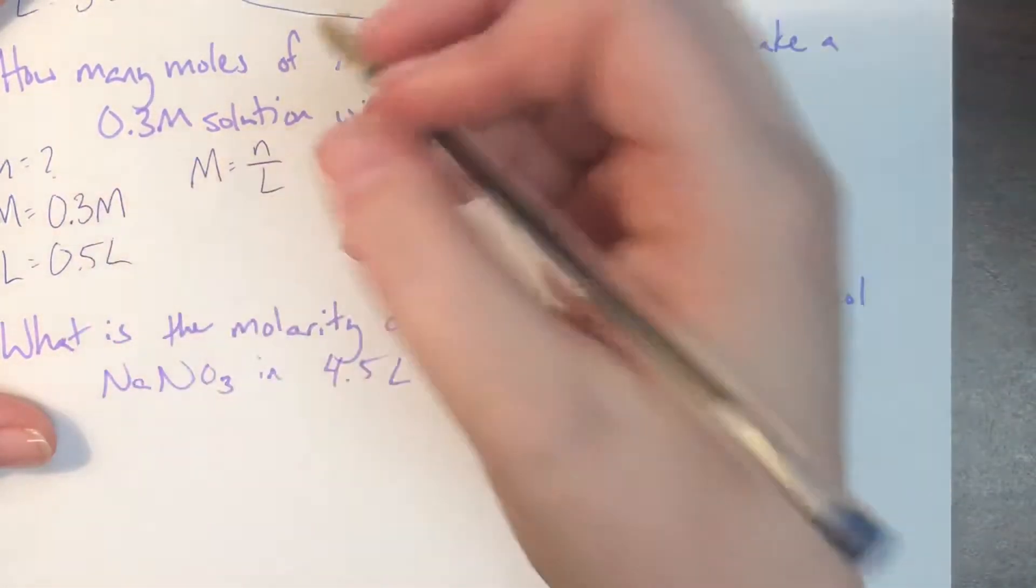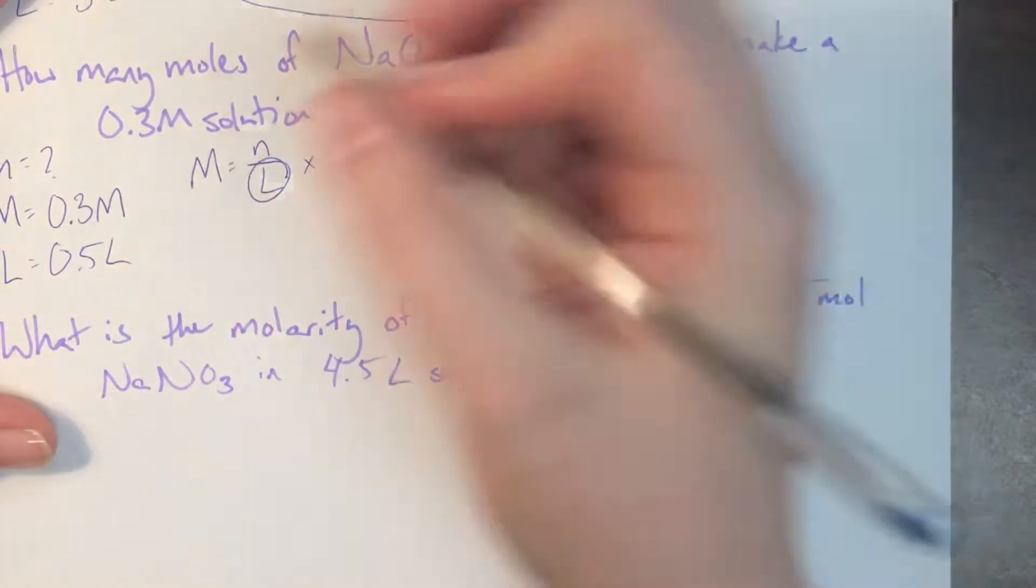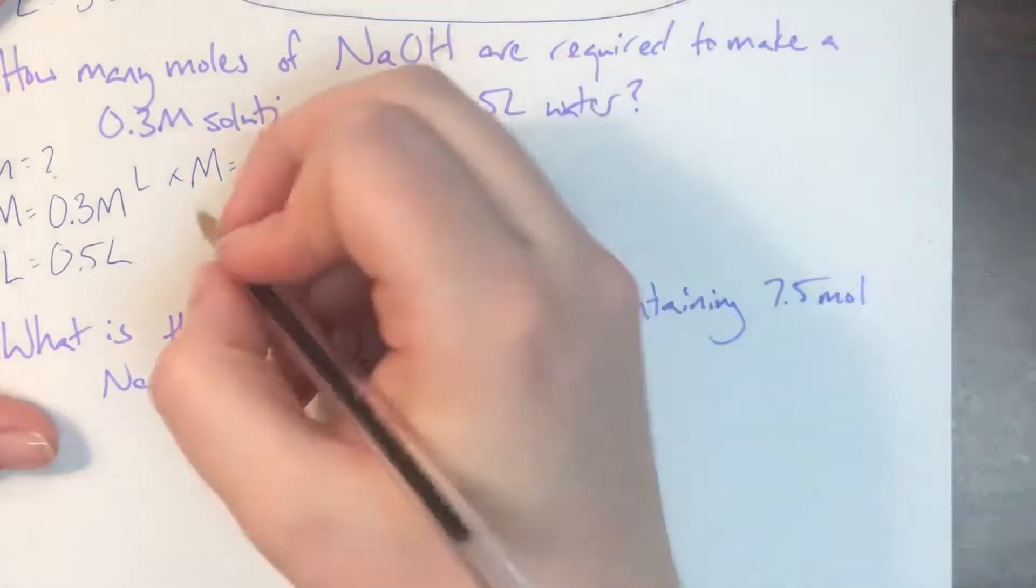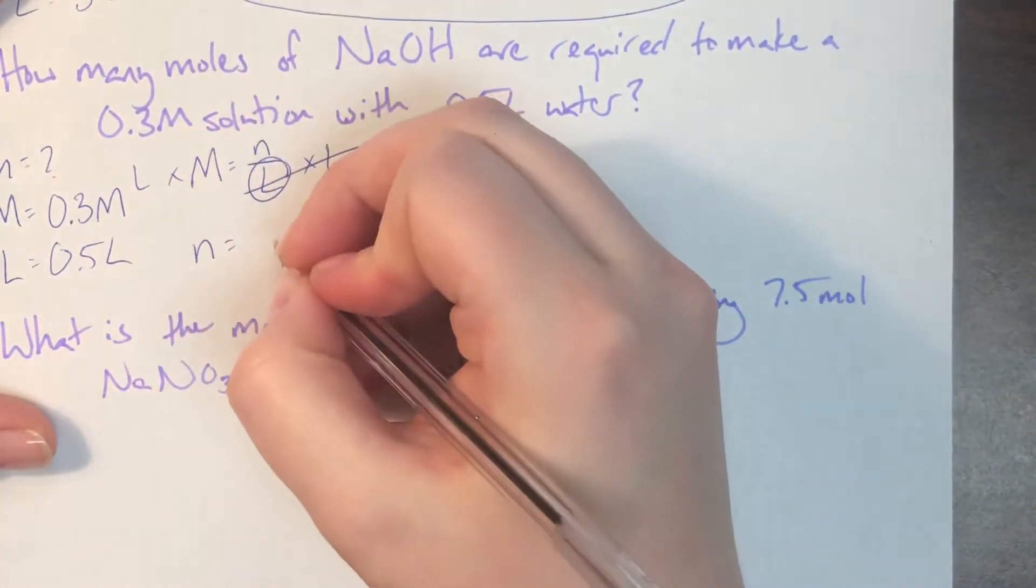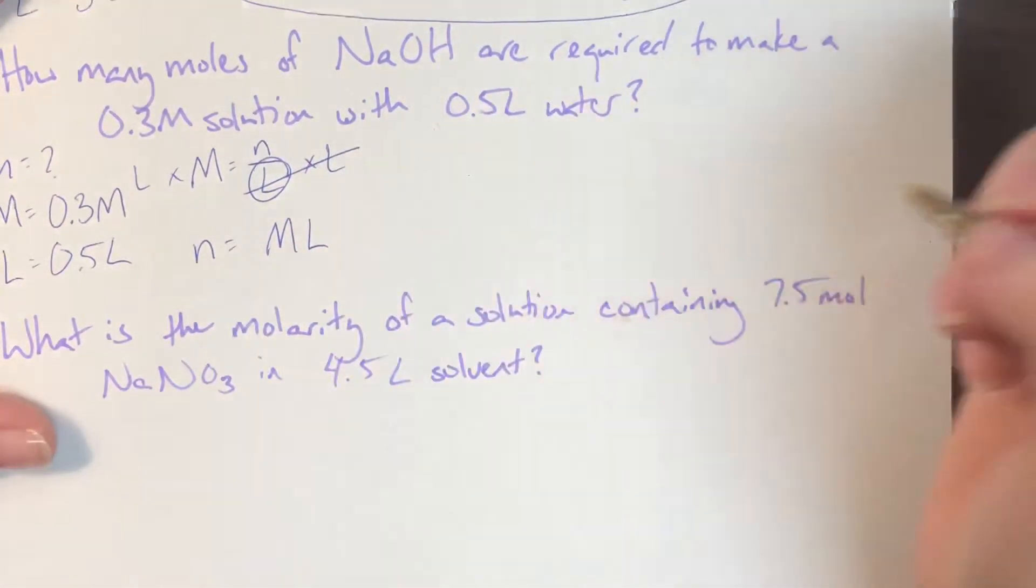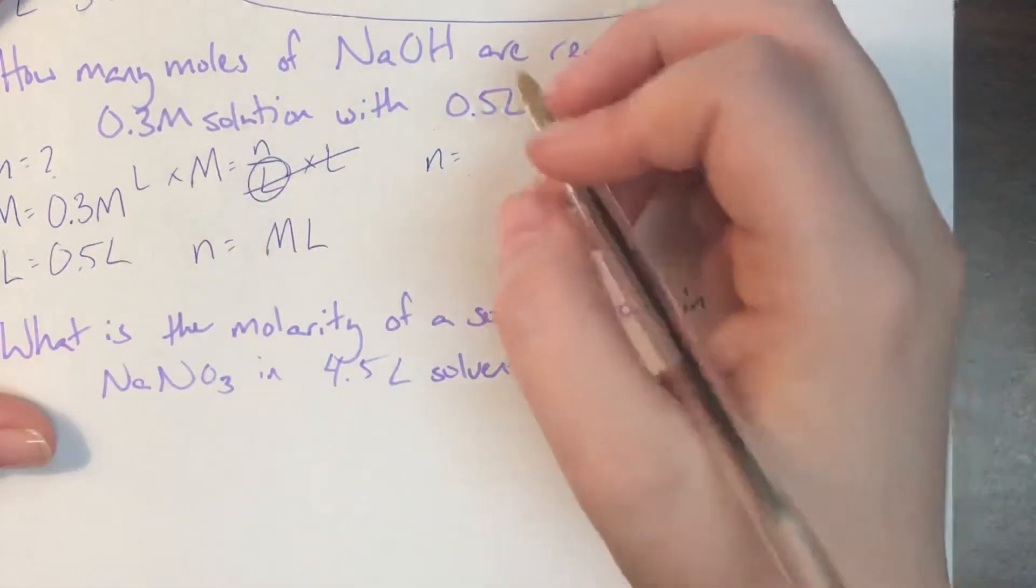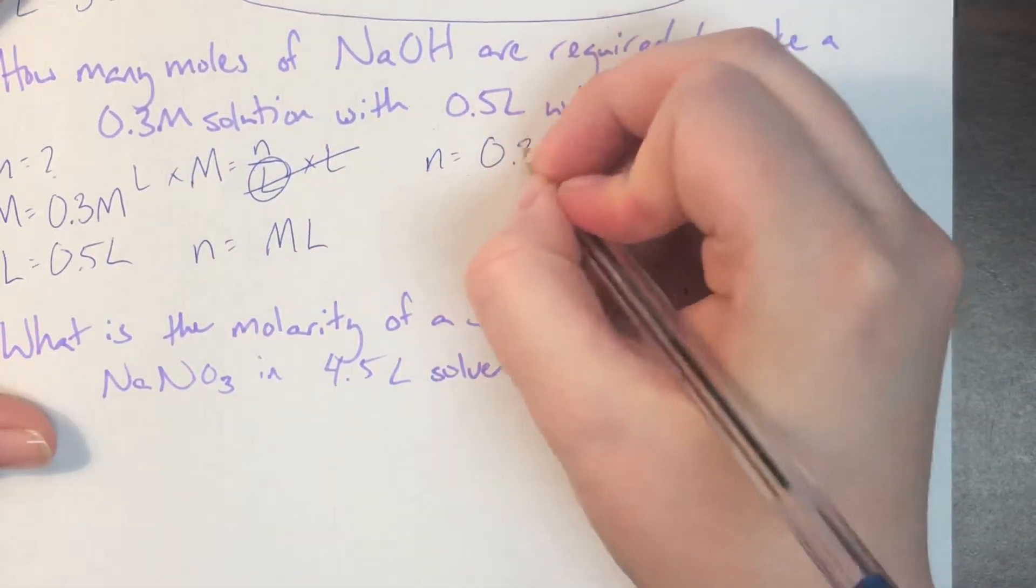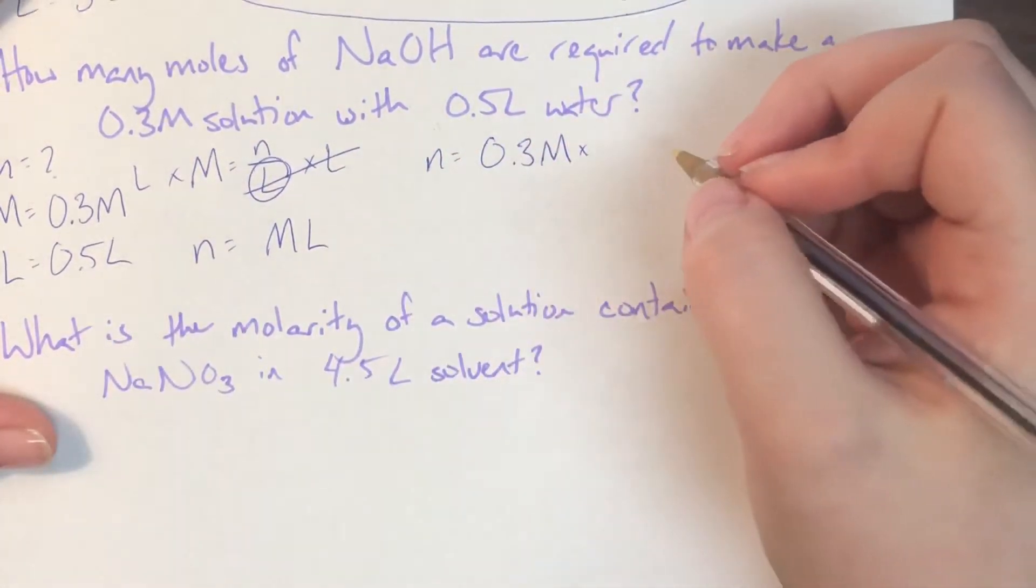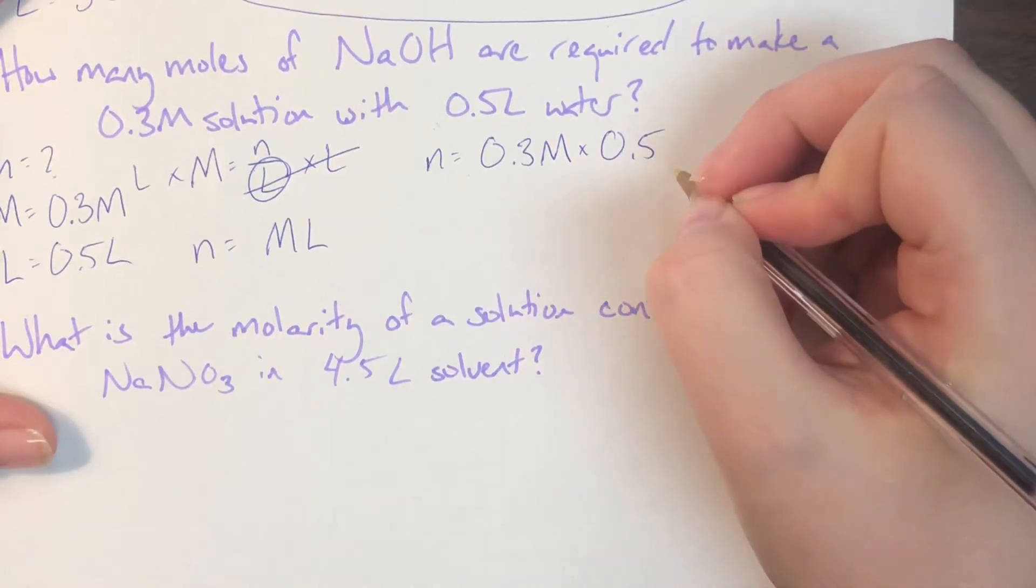I'm looking for moles, though, so I'm going to go ahead and get liters out from underneath moles, and I'll multiply both sides by liters. That will cancel it over here, leaving me with N is equal to the molarity times the liters. Once I have that, I can go ahead and plug in everything that is here. So my molarity is going to be 0.3 molar, and I will multiply that by my volume, my liters. That is going to be 0.5 liters.